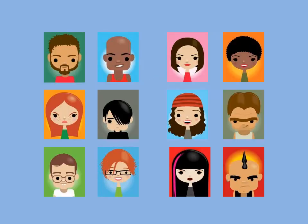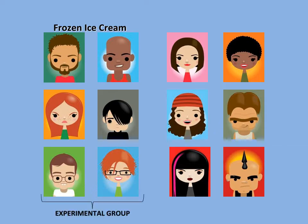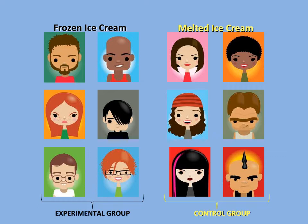Here are our test subjects. Let's randomly divide them into two groups. These subjects get frozen ice cream — they are called the experimental group, as they are testing our hypothesis based on the temperature of the ice cream. And these subjects get the melted ice cream — they are called the control group, as they are not testing the hypothesis but ensuring no other factor is affecting our results.